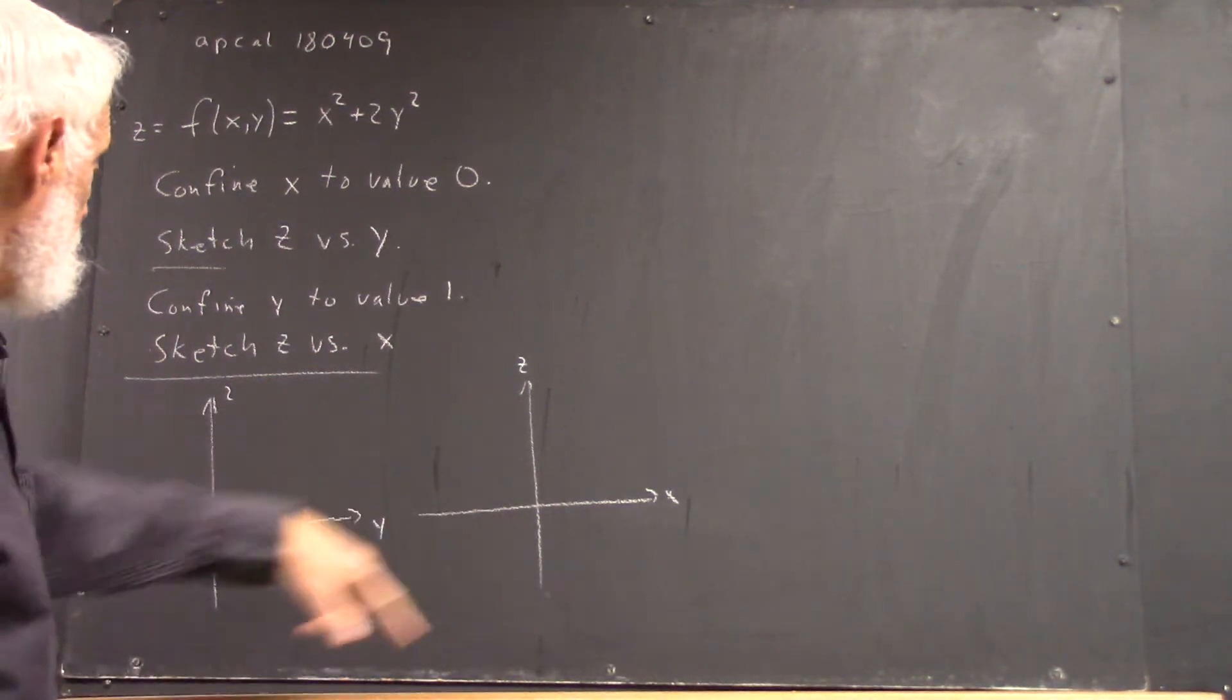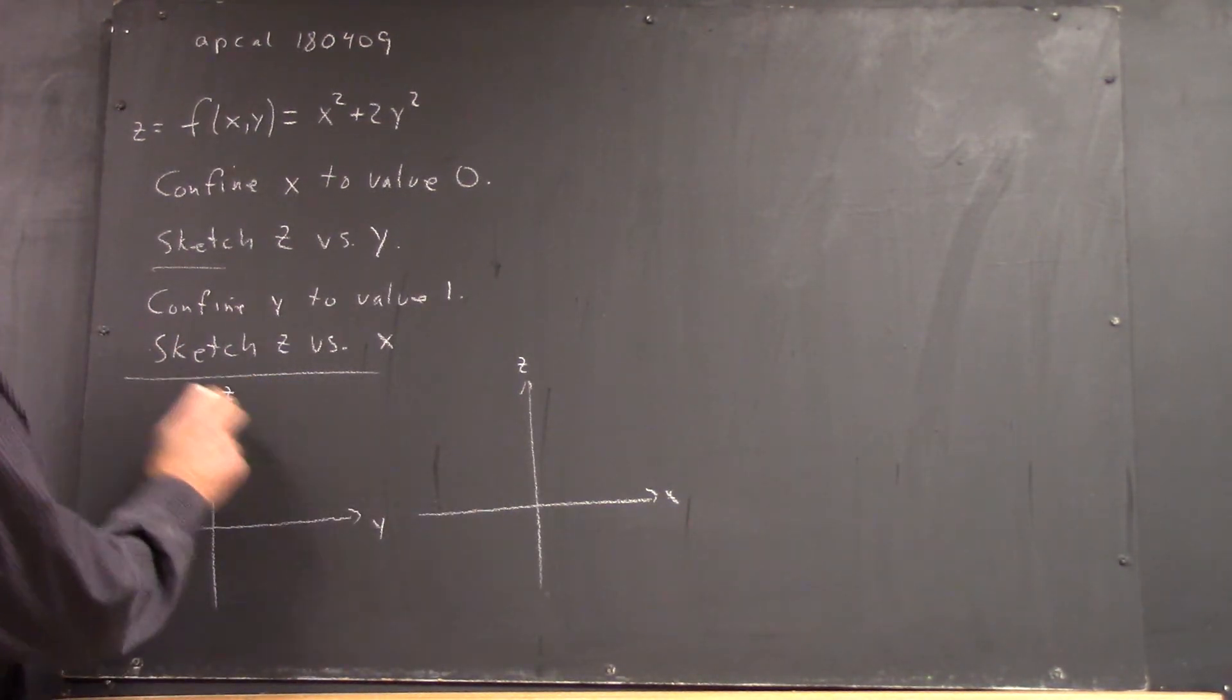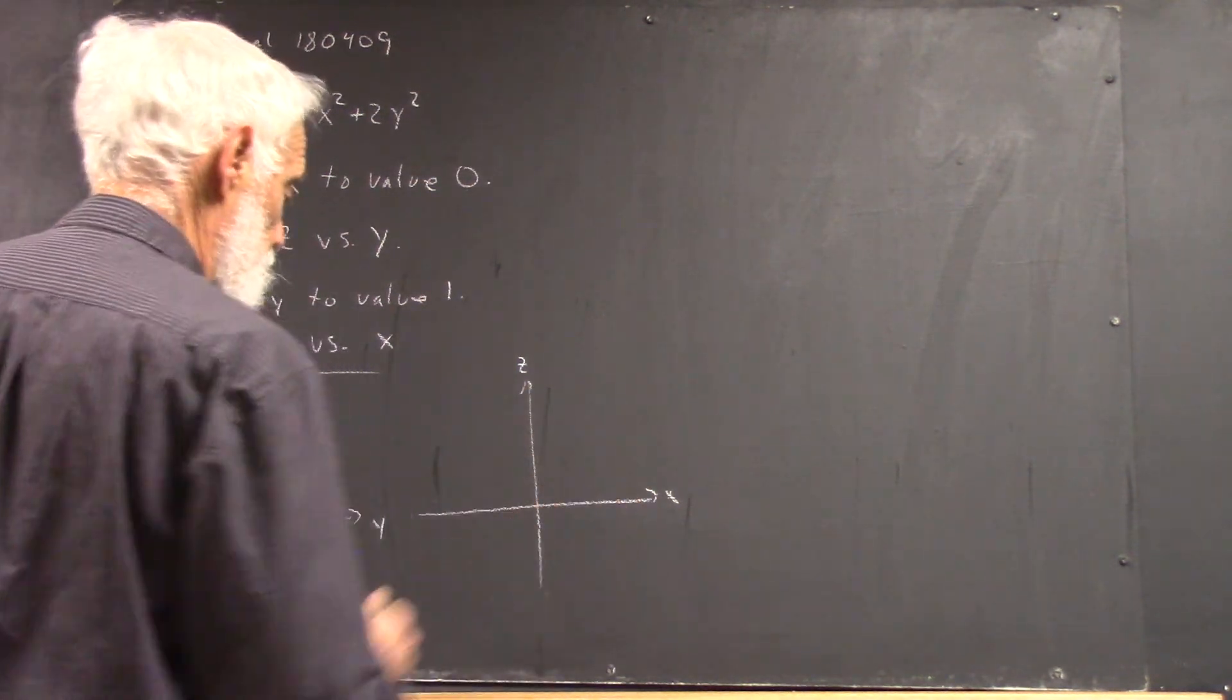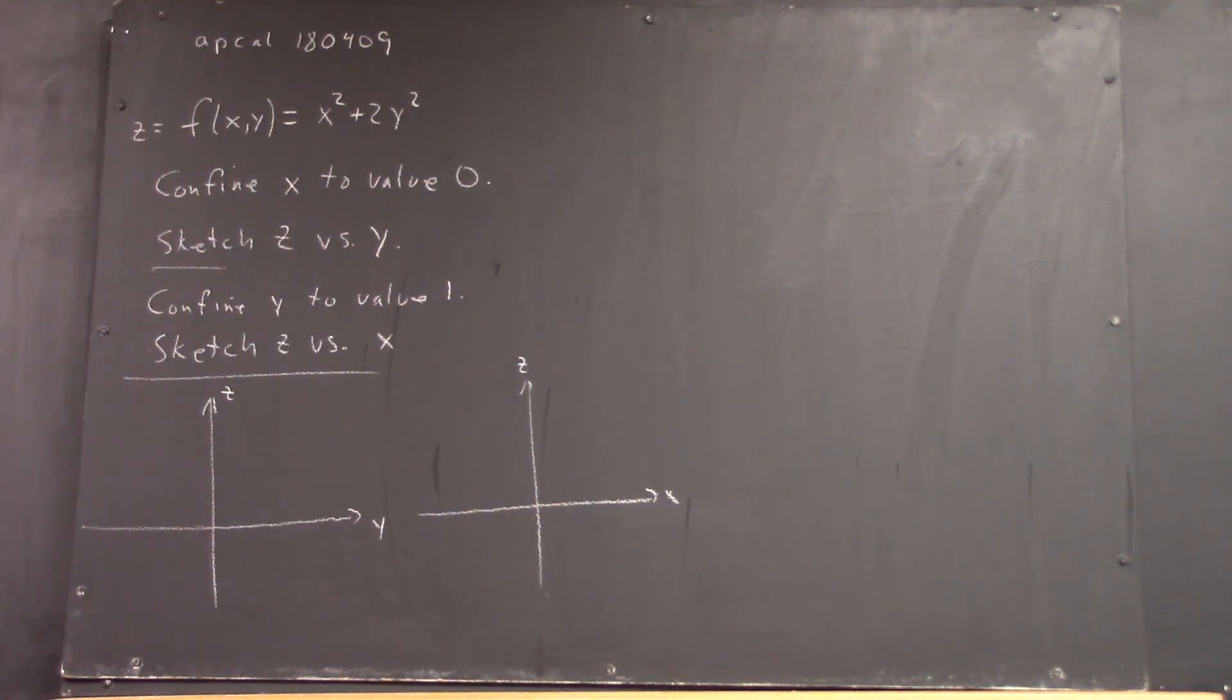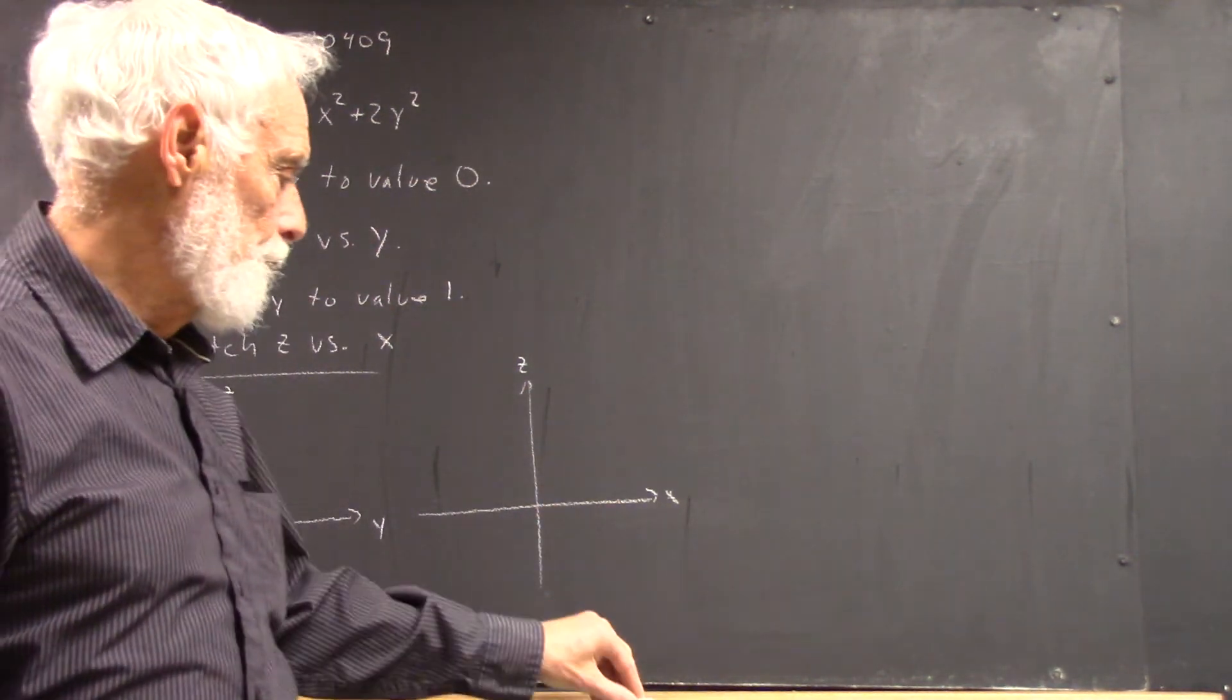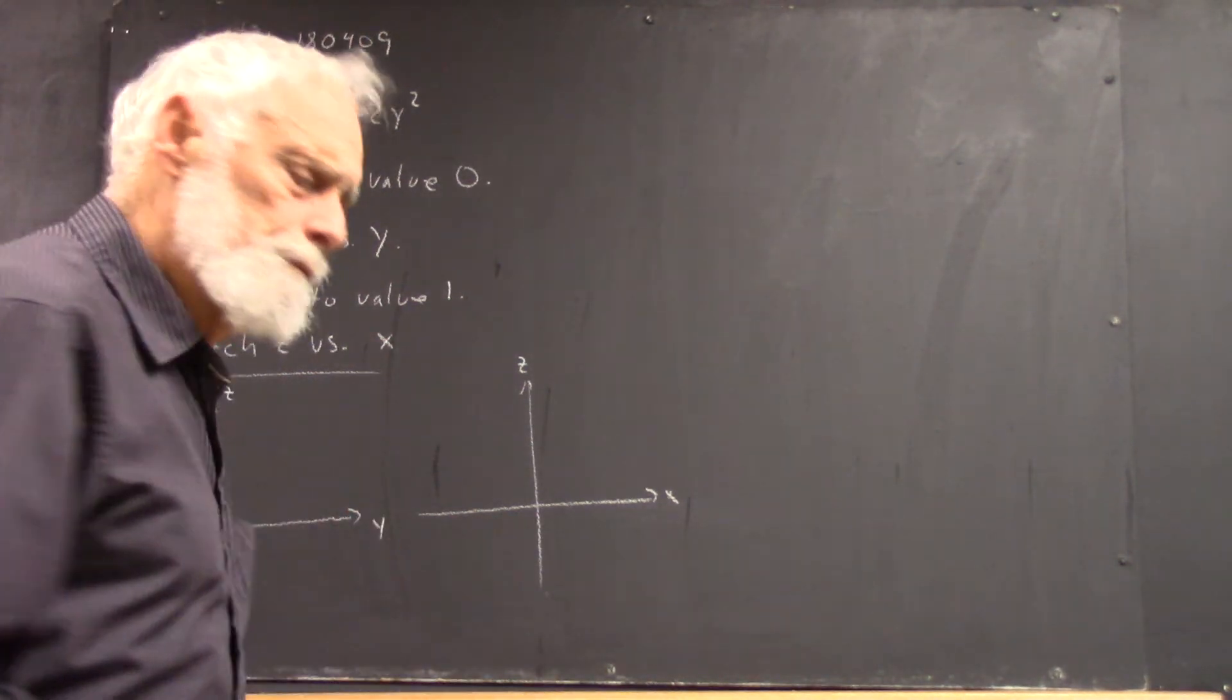So we're going to have two graphs, Z versus Y, Z versus X. And then we're going to put those two graphs together in three dimensions to see what we've got.